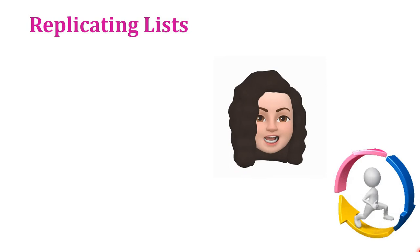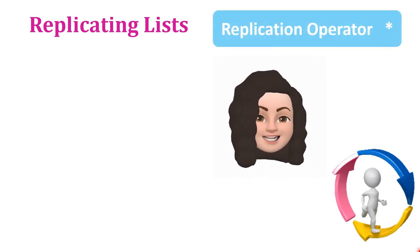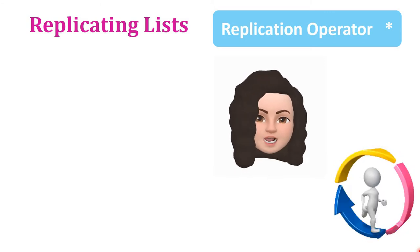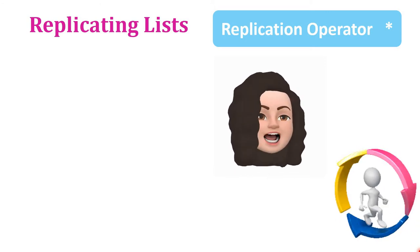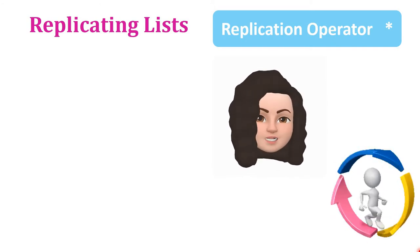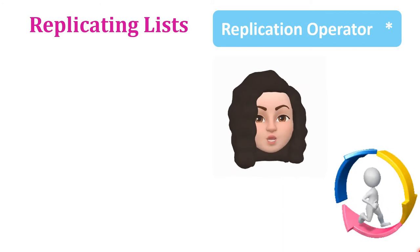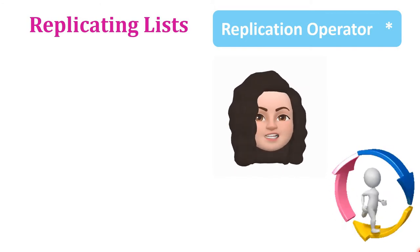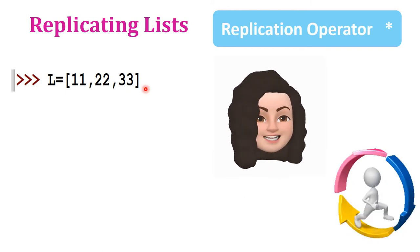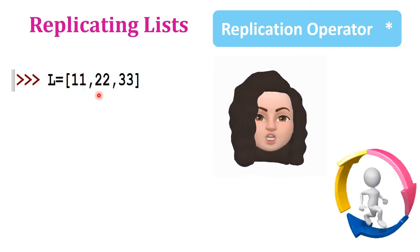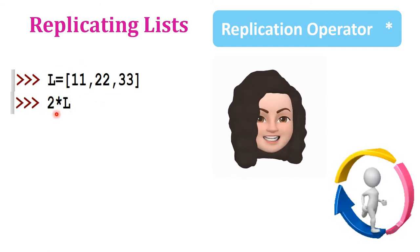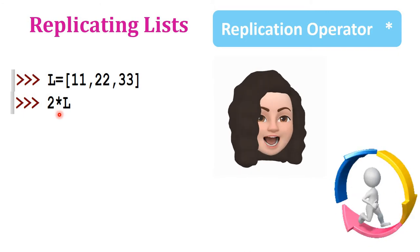The replication operator of a list is asterisk. This asterisk is used to repeat a list a specified number of times. You have to give one list and one integer value, and the list will be repeated that specified number of times. For example, L is equal to [11, 22, 33]. I want this list repeated twice, so I give 2 * L.